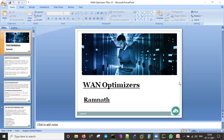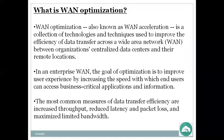Let me go to the slides now. WAN Optimization — also known as WAN Acceleration — is a collection of technologies and techniques used to improve the efficiency of data transfer across wide area networks between organizations' centralized data centers and their remote locations. The goal of optimization is to improve user experience by increasing the speed with which end users can access business-critical applications and information.